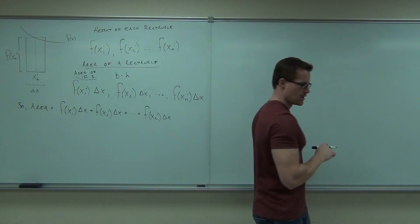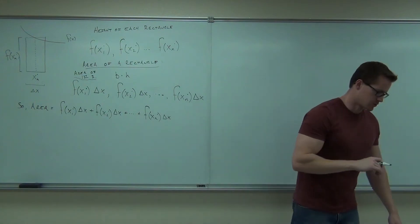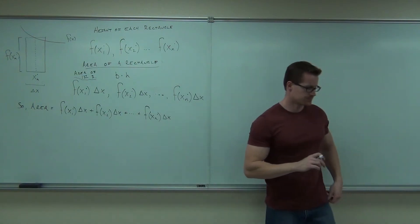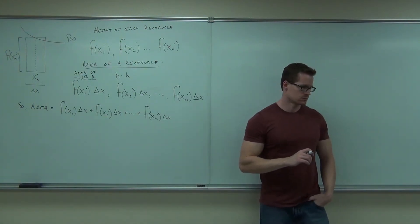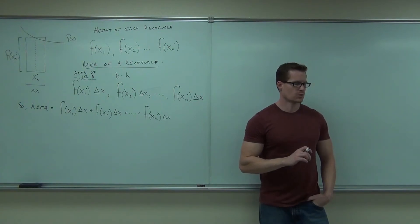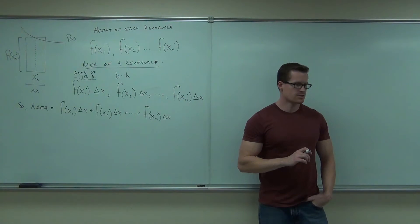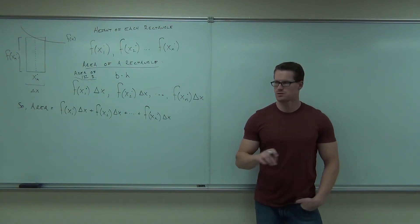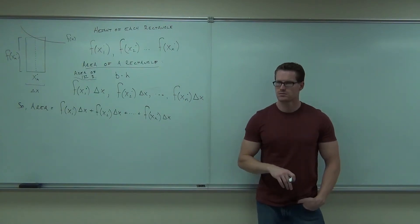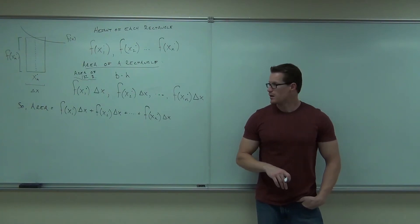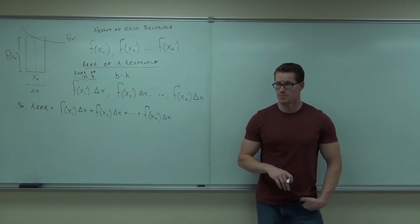Add them up. So then area would be this — we add the first one through the last one. Is there a better way to represent this thing? Using our sum.